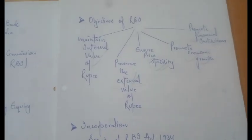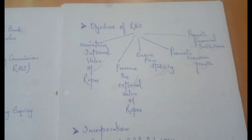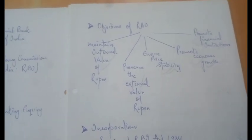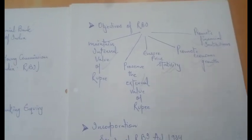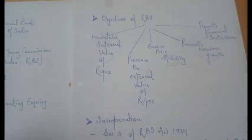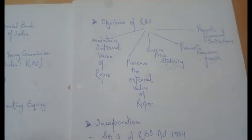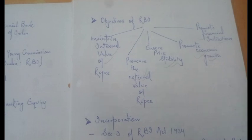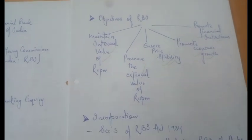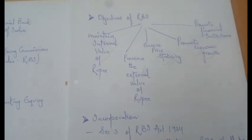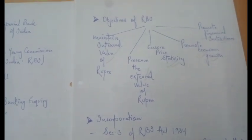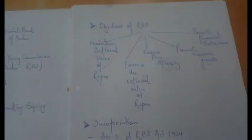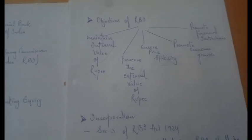Now we need to figure out the objectives of RBI. The major objective is to maintain the internal value of the rupee. Apart from that: to preserve the external value of the rupee, to ensure price stability, to promote economic growth, and to promote financial institutions.